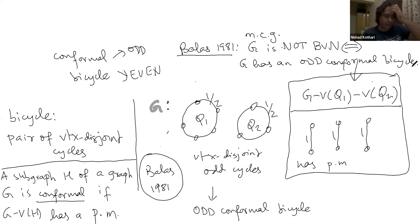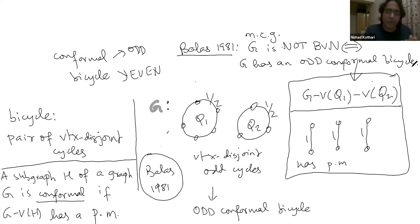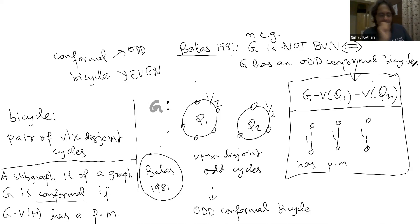Balász's theorem makes it clear that the problem is in co-NP: to convince someone a graph is not Birkhoff-von Neumann, exhibit an odd conformal bicycle — a polynomial-time certificate. What is not clear is how to put the problem in NP: how do you convince someone that a graph does not have an odd conformal bicycle? So the problem is in co-NP, not known to be in NP, and not known to be in P.